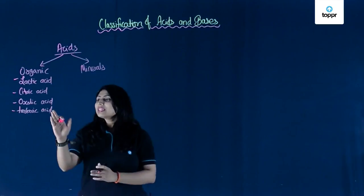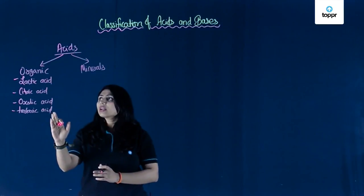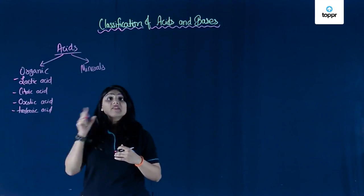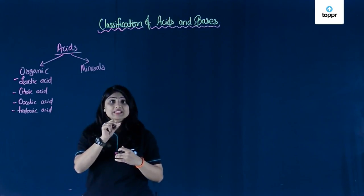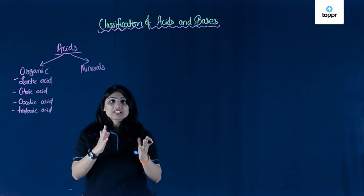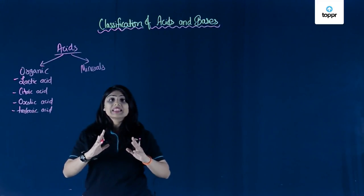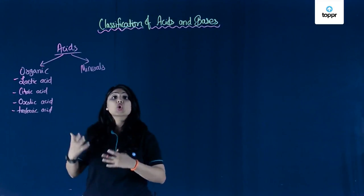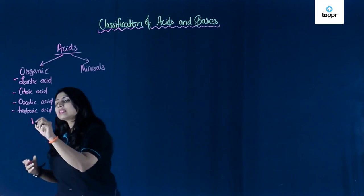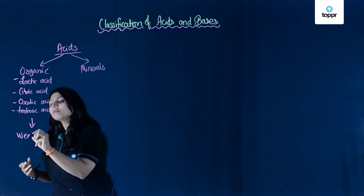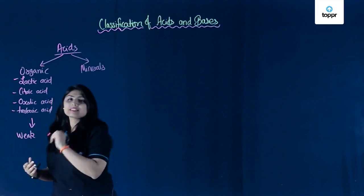We also have tartaric acid, which is found in tamarind. These acids are quite edible because they are weak acids. Whenever they fall on our skin or we eat them, we do not feel a burning sensation because they are not very corrosive — that is why they are called weak acids.